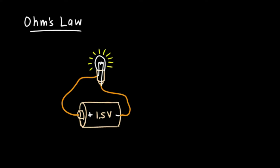Whenever you have a circuit element like this light bulb in the circuit, there are three variables to consider. There's the voltage, and the symbol for voltage is V — capital V. Voltage is measured in volts. So you would say the voltage is 1.5 volts, or if you have the electrical outlet in your home, you would say the voltage is 120 volts.